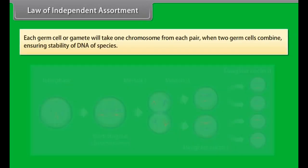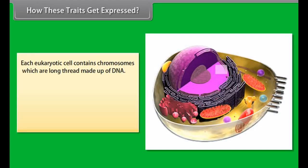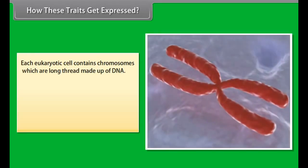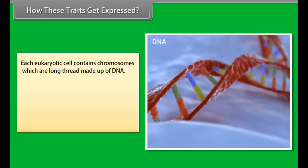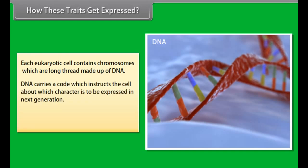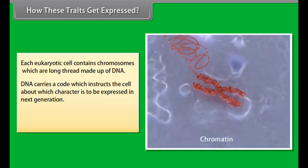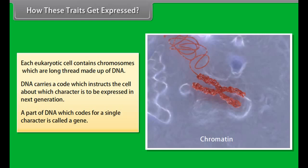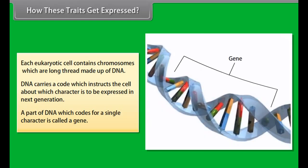In F3 generation, we find that pure tall (TT) produces only tall plants, pure dwarfs (tt) produce only dwarf plants, while hybrid tall (Tt) produces offspring in a 3 to 1 ratio — 3 tall and 1 dwarf. So we can conclude that tallness is dominant over dwarfness.